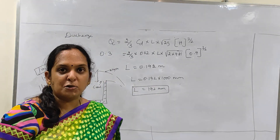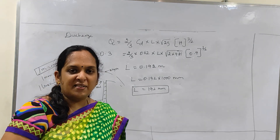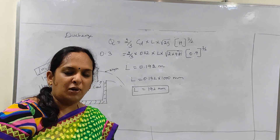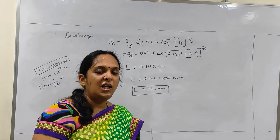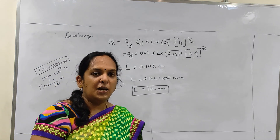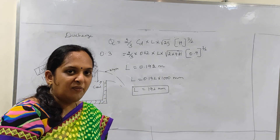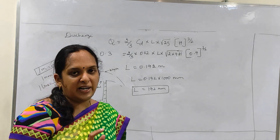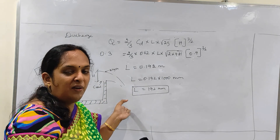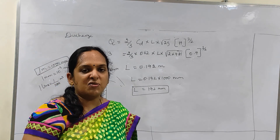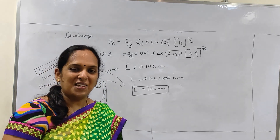So what we have seen so far: what is a notch, what is a weir, what is nappe, and what is a crest — all those definitions. Apart from that, we have seen the different types of notches and different types of weirs. We have derived the equation for a rectangular notch and solved three problems based on that equation. In our next video, we will go with the triangular notch. Thank you.